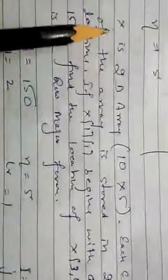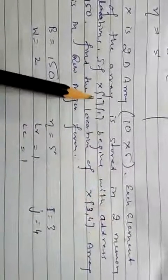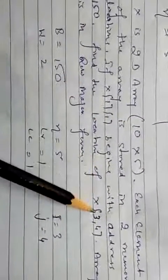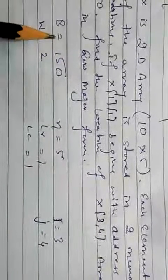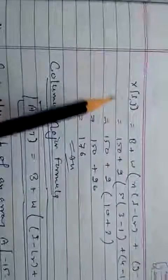Let's take another example. Array X is a two-dimensional array of size [10][5], so the row size is 10 and the column size is 5. When size is given directly like this, least row and least column are both zero. Each element requires 2 bytes. If the array begins at address 150 and is stored in row major order, find the location of X[3][4]. Base address = 150, W = 2, N = 5, Lr = 1, Lc = 1, i = 3, j = 4. Applying the formula gives the answer.